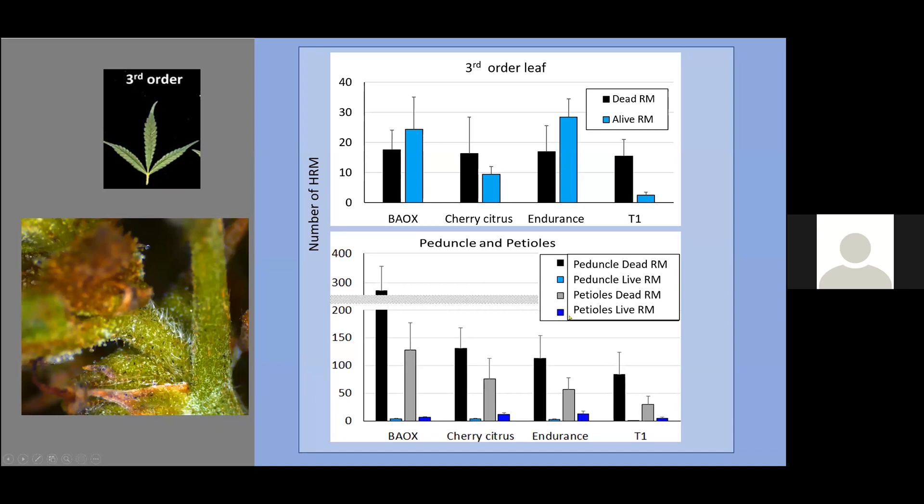This means that these russet mites were moving from the leaves out to the flowers to cause the heaviest damage. They reached up to 400 compared to 40 on the leaves. We found dead russet mites and live russet mites on both petioles and peduncles. The lowest ones were in the T1 cultivar.